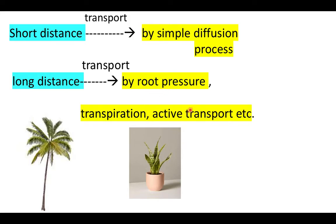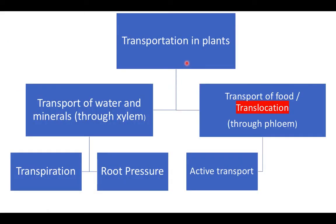Transportation in plants involves transport of water and minerals, and transport of food. Water and minerals are transported through xylem tissue, and food is transported through phloem tissue. Just like blood flows through blood vessels in our body, here xylem and phloem vessels serve as the transport channels in plants.